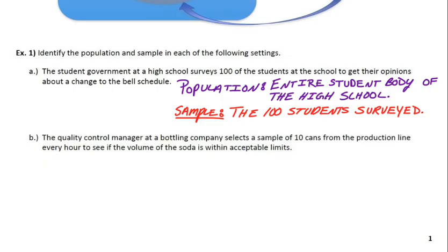Part B says the quality control manager at a bottling company selects a sample of 10 cans from the production line every hour to see if the volume of the soda is within acceptable limits.